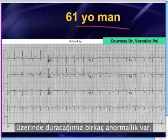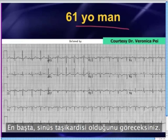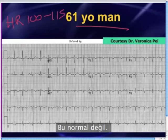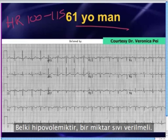Now, there are a few abnormalities that we'll walk through. First of all, you'll notice that there is sinus tachycardia, and the heart rate is somewhere around 100 to 115 or so. That's not normal. Of course, he's not healthy — maybe he's hypovolemic. We'll give some fluids.